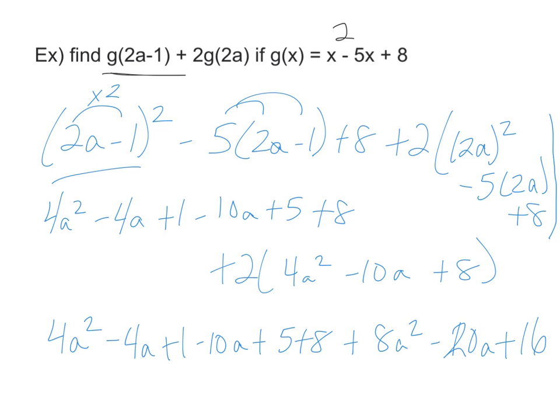Then from there you're just going to combine your like terms, which when you combine your like terms you should get 12a squared minus 34a plus 40.